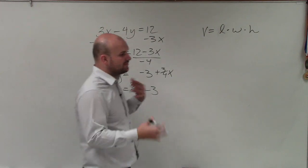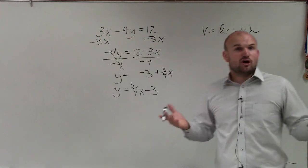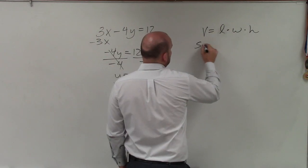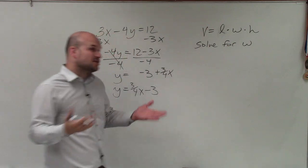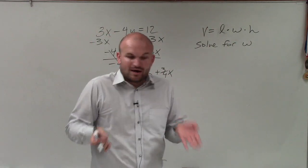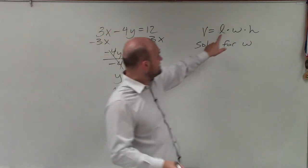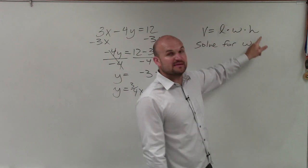Now, a lot of times when we're solving these equations, we solve for certain variables. For instance, if I said solve for w. Well, if I want to solve for w, what I need to do is say, what is happening to my w? Well, it's being multiplied by l as well as being multiplied by h.